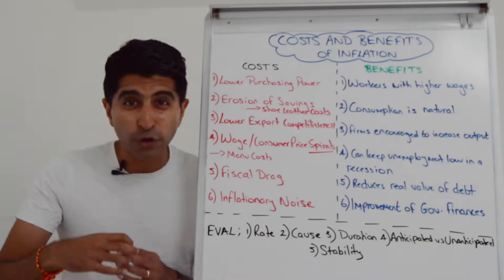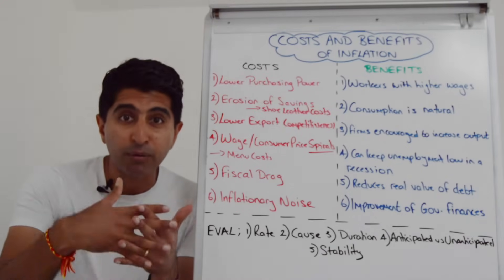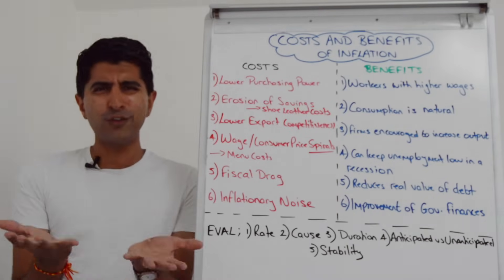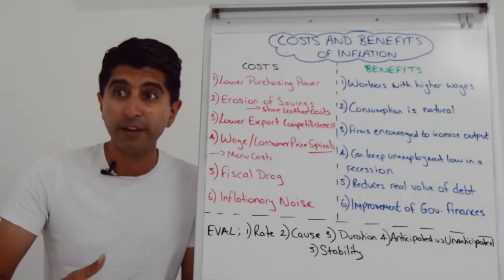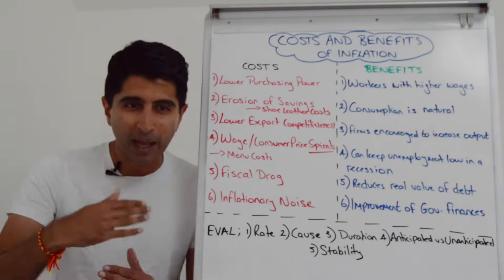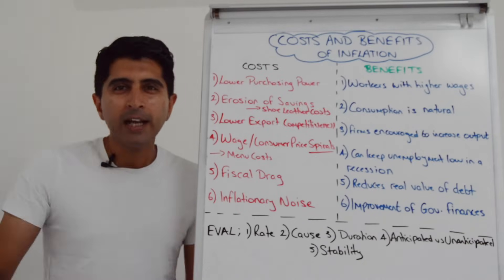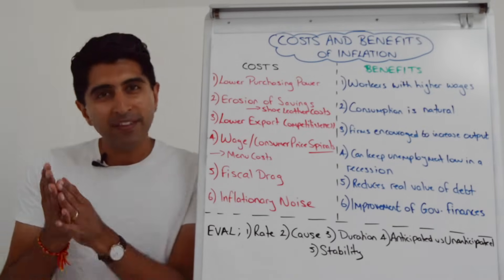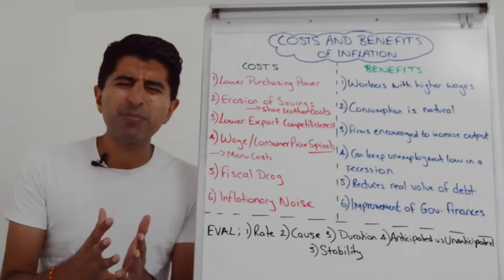Workers then ask for an even higher pay rise and you get an inflation spiral. It can also come from the consumer side: when consumers anticipate high inflation, the rational thing is to bring forward consumption — buying now at lower prices rather than waiting. If all consumers do this, it drives up consumption and aggregate demand, causing demand-pull inflation. There are also menu costs: firms must continually reprint price catalogs and update price tags, adding costs they pass on via higher prices.